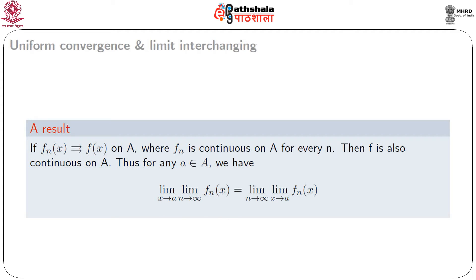Let us consider some consequences of uniform convergence. First, involving limit interchange: if f_n(x) converges to f(x) uniformly on A, where f_n is continuous on A for every n, then f is also continuous on A. Thus for any a ∈ A, the limit as x → a of the limit as n → ∞ of f_n(x) equals the limit as n → ∞ of the limit as x → a of f_n(x). That is, the limit operations on x and n are interchangeable as a consequence of uniform convergence.